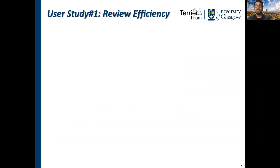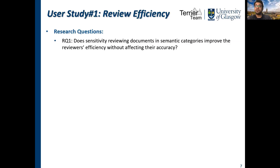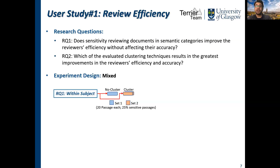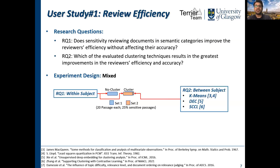In our review efficiency study, we addressed the following two research questions: Does reviewing documents in semantic categories improve reviewer efficiency, and which is the most effective document clustering approach for sensitivity review? We follow a mixed experimental design. For research question 1, we evaluate the impact of reviewing documents with or without clustering in a within-subject design. For research question 2, we follow a between-subject design to evaluate the effectiveness of different clustering techniques — namely K-means, DEC, and SCCL from the literature. We use different sets of passages for the control and treatment conditions, where each set comprises 20 passages, including 5 sensitive passages.